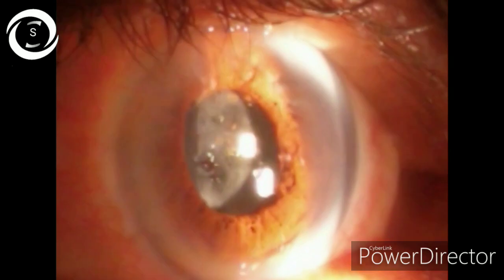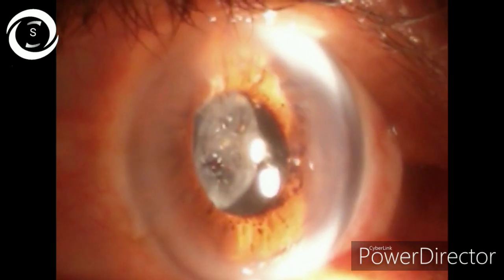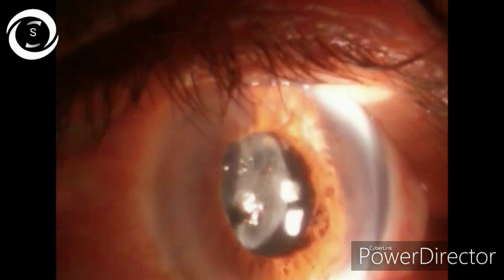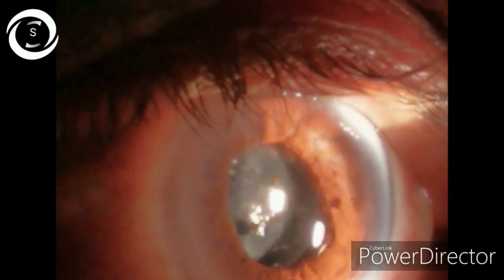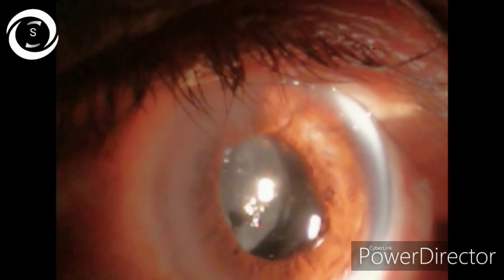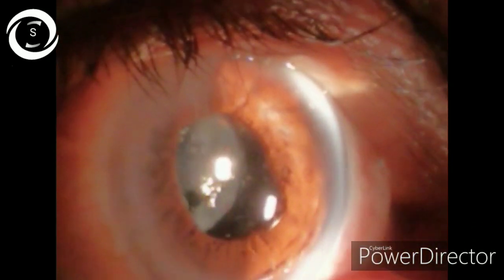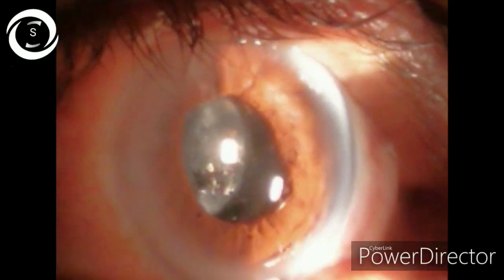As PCO occurs late, if the vision is decreased after few months to few years following cataract surgery, the top-most differential in your mind should be PCO. Diagnosis is with decreased vision and PCO on slit lamp examination.